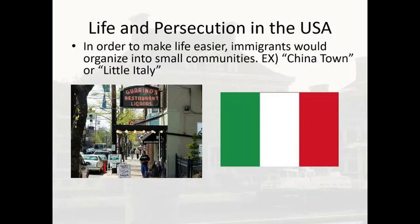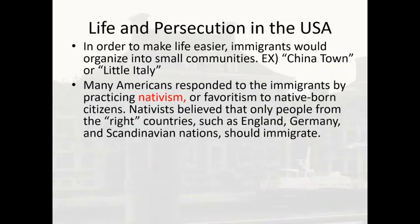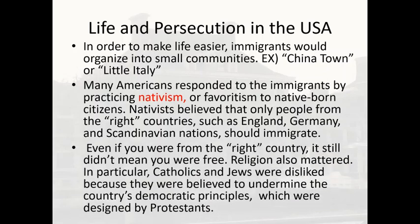Many Americans responded to these immigrants by practicing nativism — favoritism toward native-born citizens. Nativists believed that only people from the 'right' countries, such as England, Germany, and Scandinavian nations, should immigrate. You had to be from the right area of Europe, have the right skin color, and also be the right religion. Catholics and Jews were particularly disliked because they were believed to undermine the country's democratic principles, which were designed by Protestants.